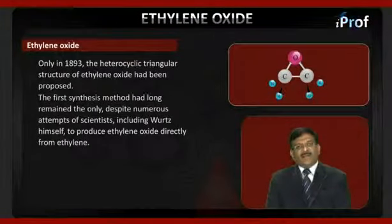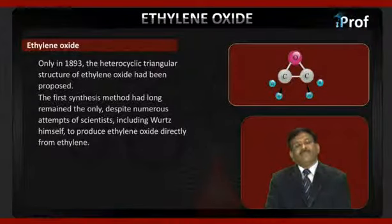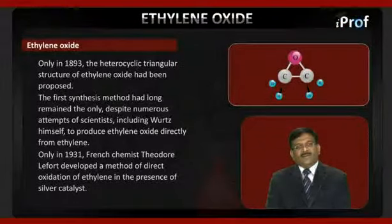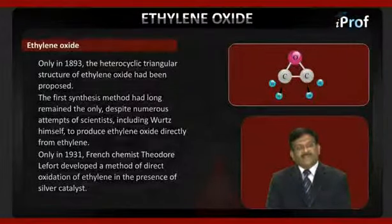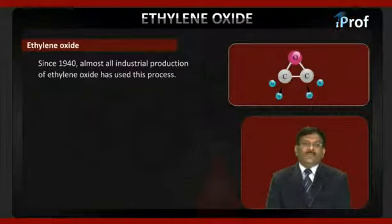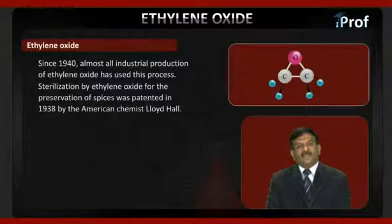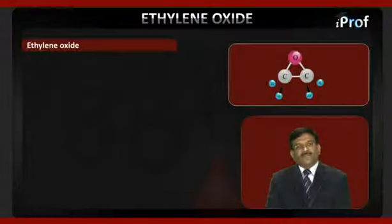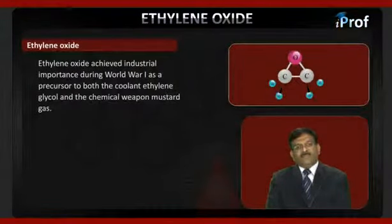The first synthesis method long remained the only one, despite numerous attempts by scientists including Wurtz himself to produce ethylene oxide directly from ethylene. Only in 1931 did French chemist Theodore Lefort develop a method of direct oxidation of ethylene in the presence of a silver catalyst. Since 1940, almost all industrial production of ethylene oxide has used this process. Sterilization by ethylene oxide for the preservation of species was patented in 1938 by American chemist Lloyd Hall. Ethylene oxide achieved industrial importance during World War One as a precursor to both the coolant ethylene glycol and the chemical weapon mustard gas.